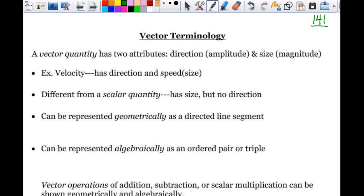A little bit of a repeat of stuff, but a vector quantity has two attributes. We've talked about those two. Direction and size, or amplitude and magnitude. Those words are used interchangeably, so just make sure that you know what's what.